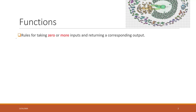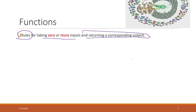Functions are just a piece of Python code, or the rules, that can take zero or multiple inputs. And normally they will return a corresponding output. So basically, you provide the input and they give you the output.